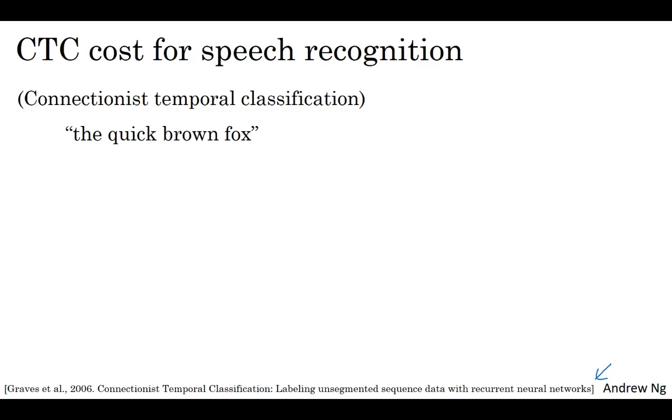Here's the idea. Let's say the audio clip was of someone saying the quick brown fox. We're going to use a neural network structured like this with an equal number of input X's and output Y's. I've drawn a simple unidirectional forward-only RNN, but in practice this will usually be a bidirectional LSTM or bidirectional GRU, and usually a deeper model.